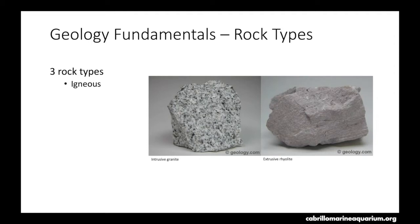Extrusive rocks are formed from lava that erupts from a volcano. The two pictures shown here are chemically the same type of rock — exact same chemical composition — it's just they formed in different environments. This intrusive granite formed within a magma chamber. The magma chamber cooled off and it cools much slower within the earth, so these crystals are allowed to grow much larger than they would for an extrusive rock. For this extrusive rock, it is lava erupted from a volcano, exposed to the atmosphere and cooling much quicker, so the crystals are not allowed to get as large as the intrusive counterpart.